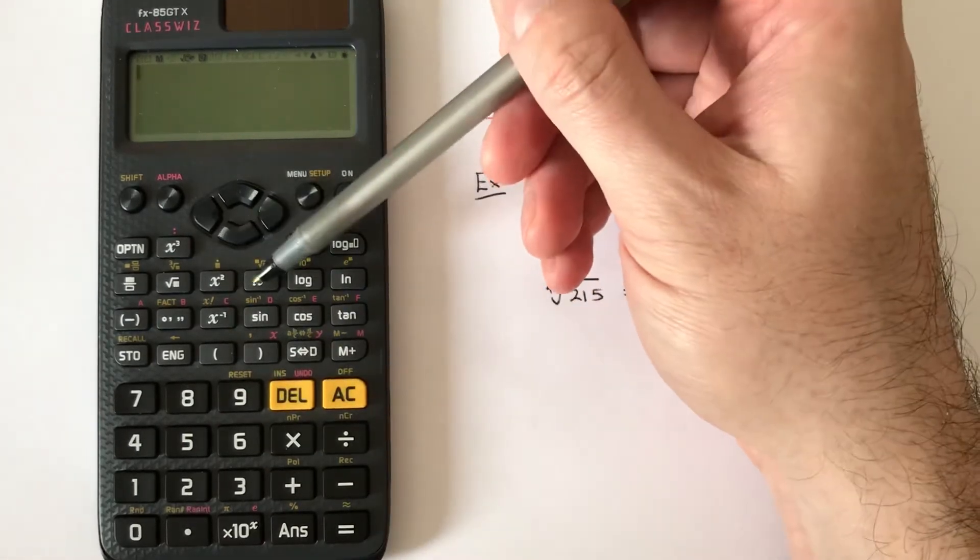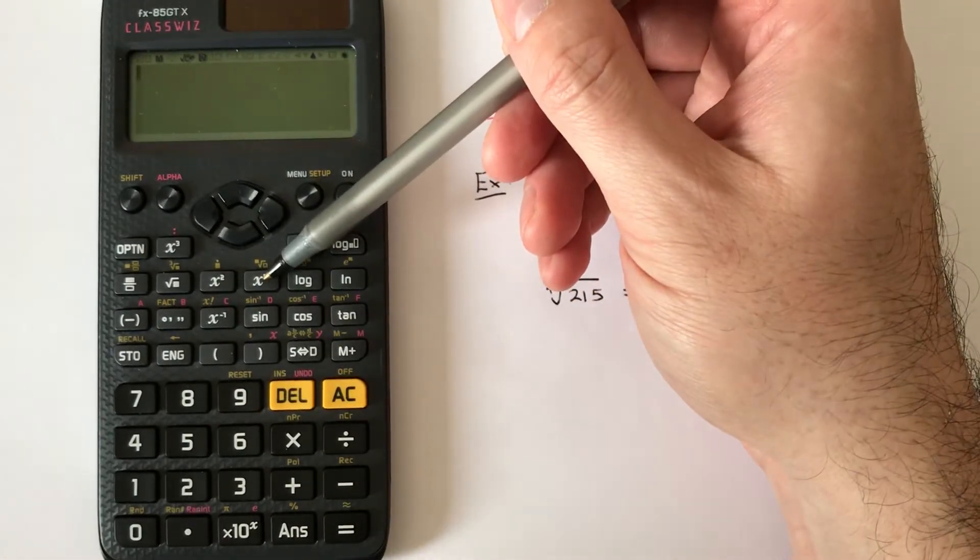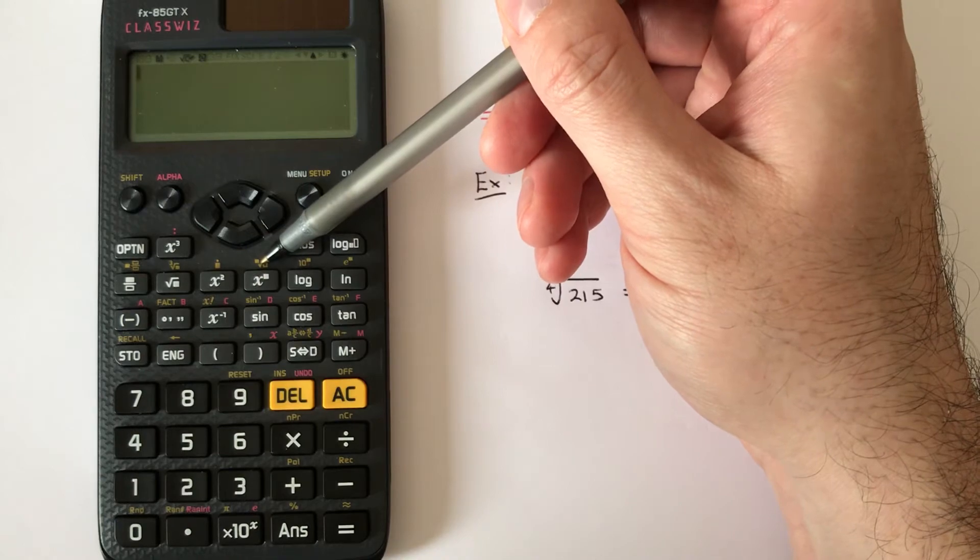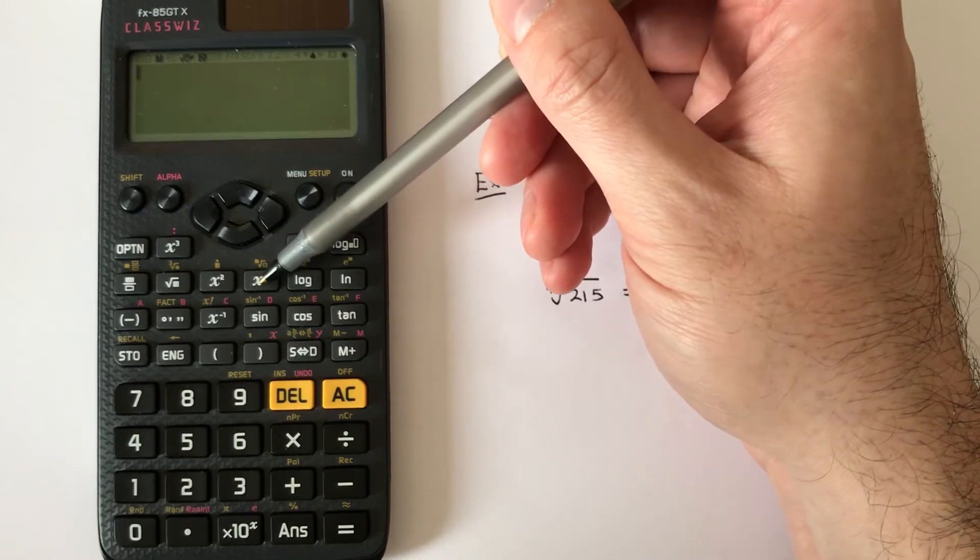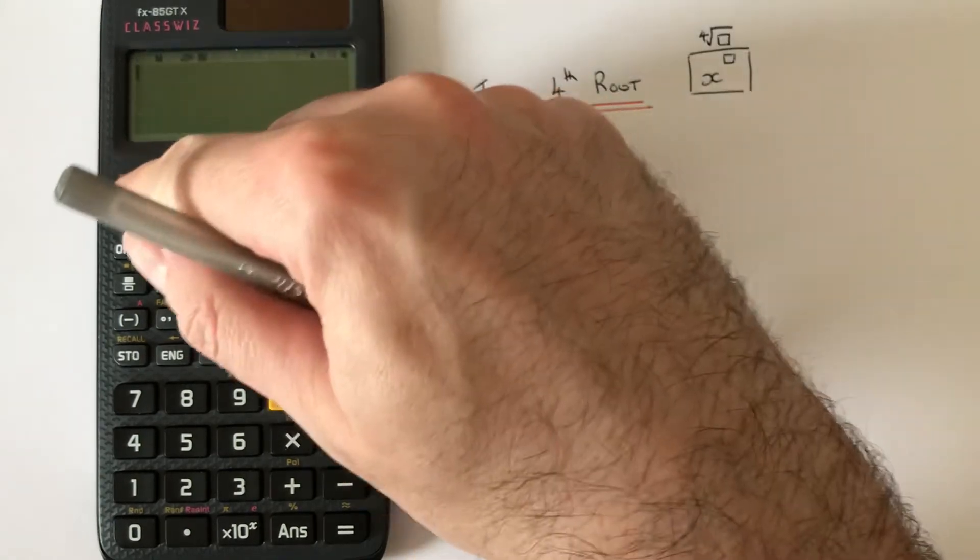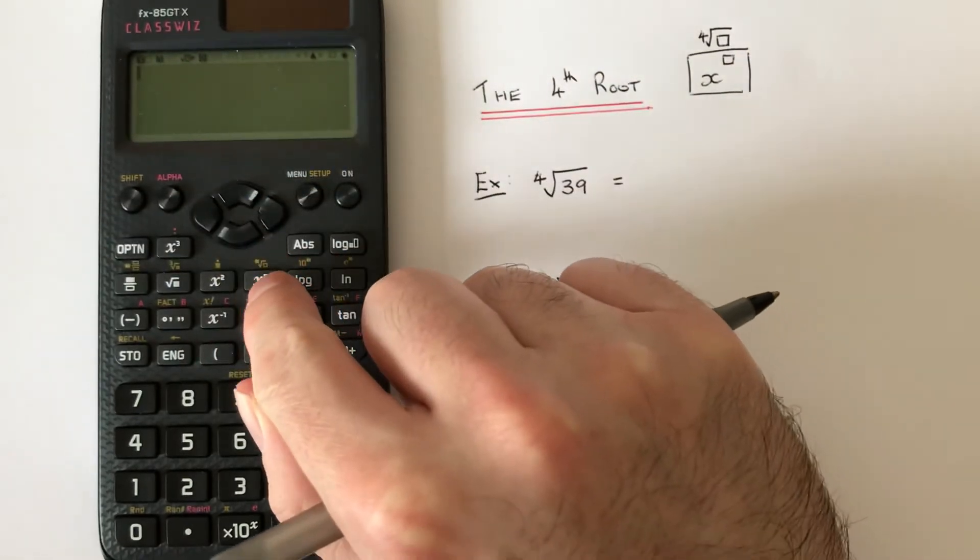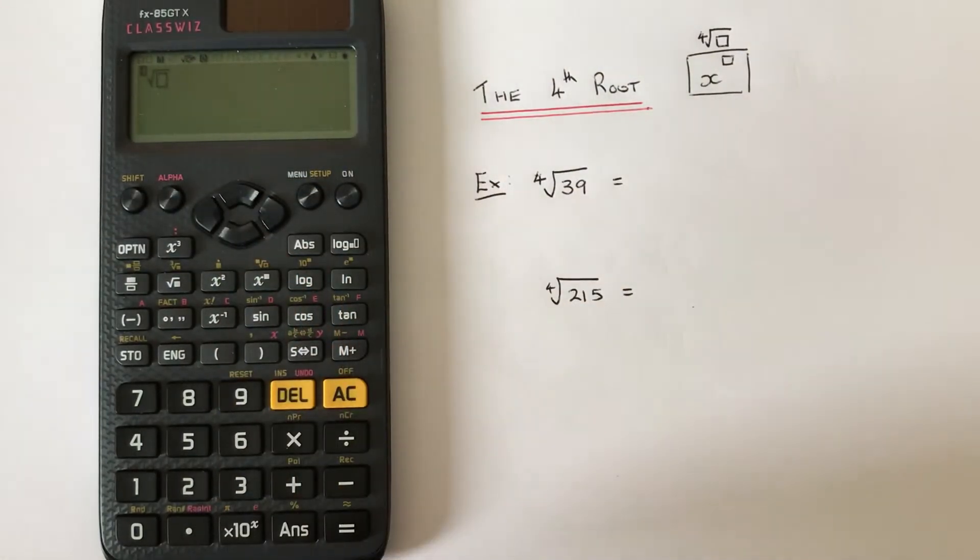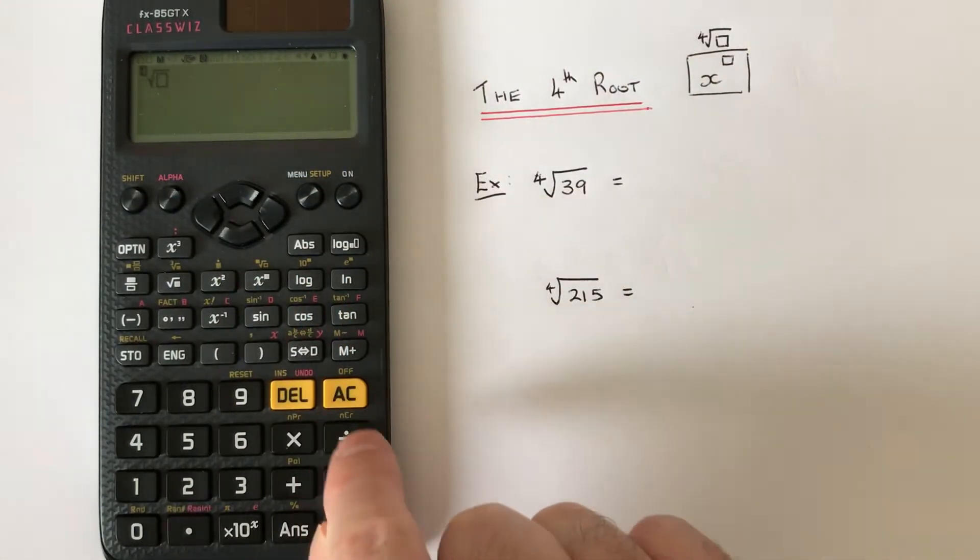Which is located on the second row of the scientific functions, and it is on the second function of the power key. So we need to press shift and then x to the power. So let's have a look at the examples.